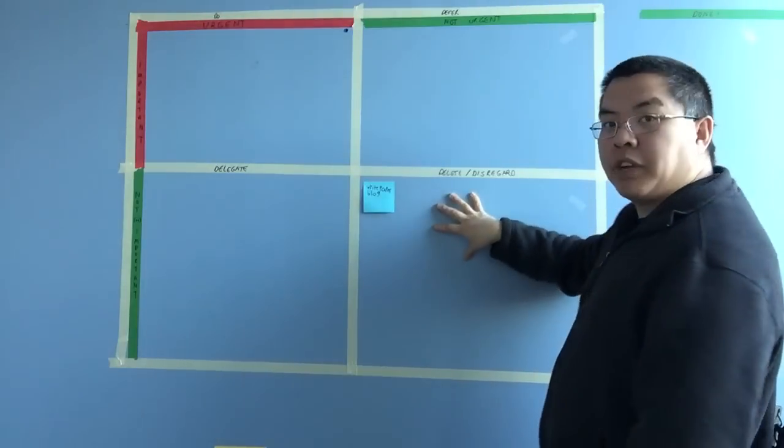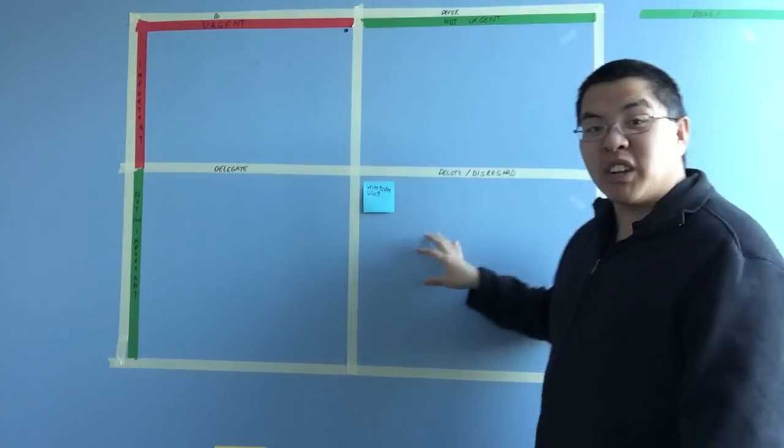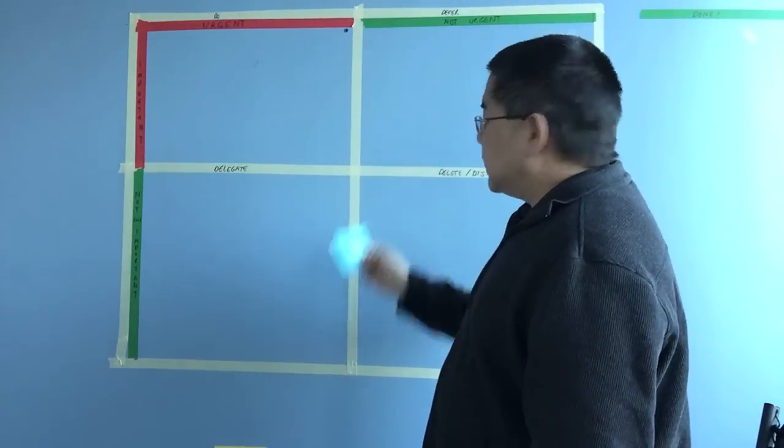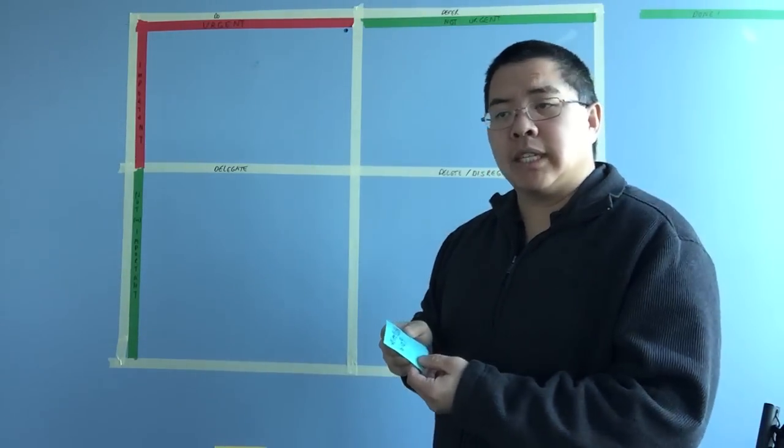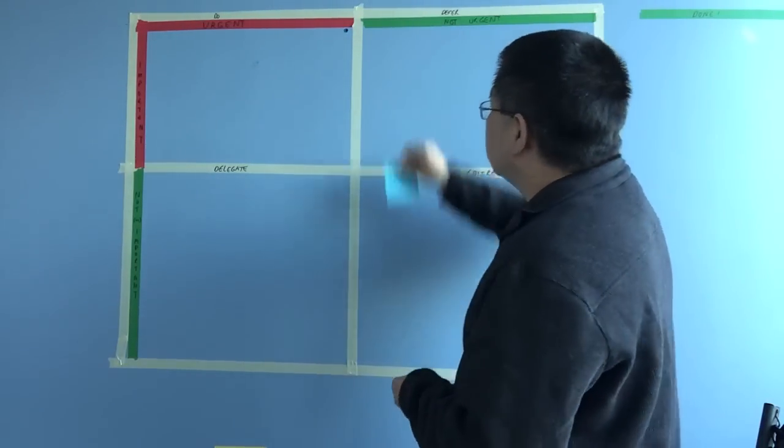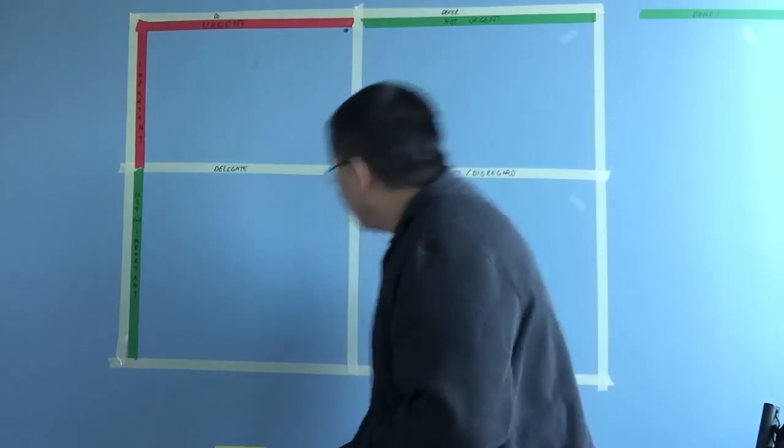And finally, over here is the disregard pile. It's stuff that's not urgent, stuff that's not important. What you want to do is write out your tasks on sticky notes. You may or may not want to put due dates on them. And then start placing them on the board wherever they belong.